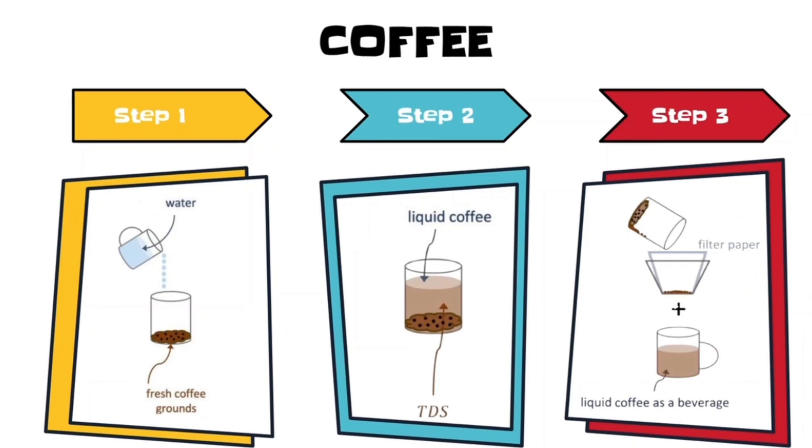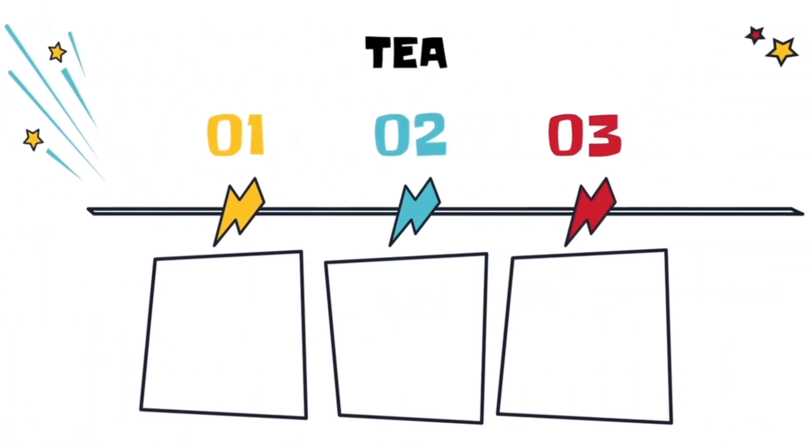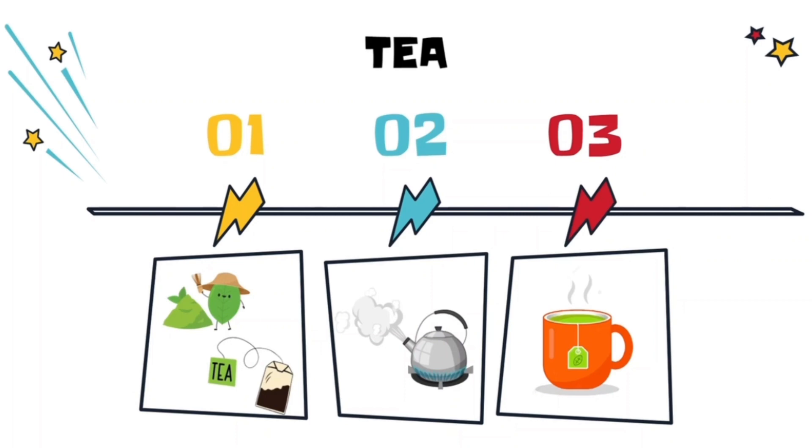Besides, the process to prepare green tea is almost the same with coffee. The green tea leaf acts as solute and the hot water acts as the solvent. When the tea bag meets the hot water, the hot water will extract the green tea flavors from the tea leaves. Then the preparation of green tea is done.